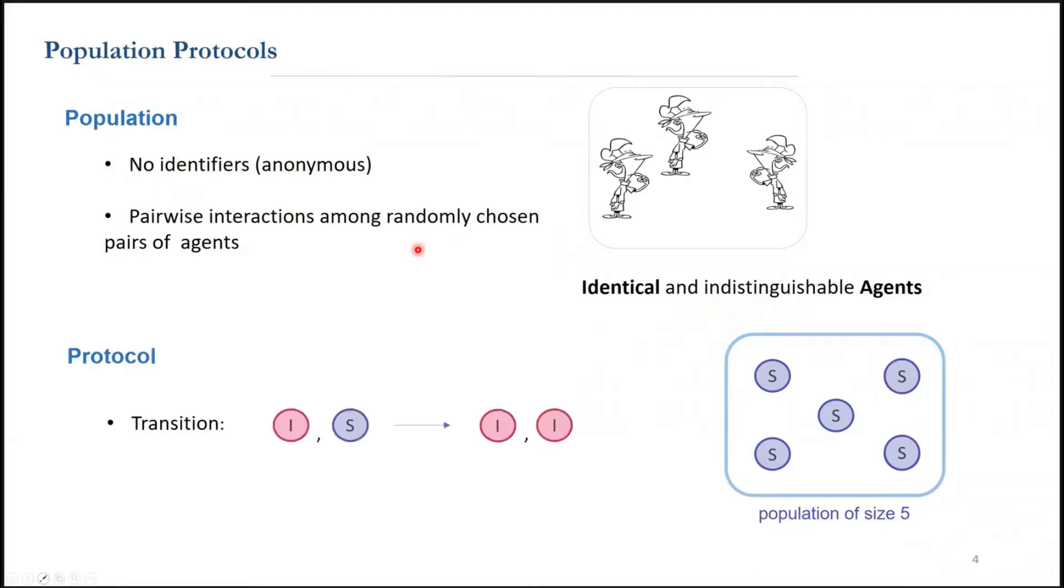A protocol tells the agents what to do if selected. The agents observe the state of the other one and follow the rules of the protocol to update their own state. Here is an example of a protocol with a single transition. It consists of a pair of states as input and as output.